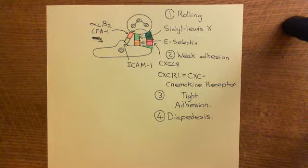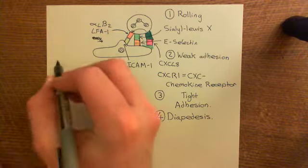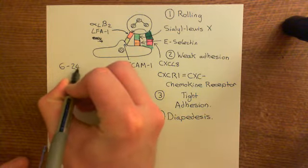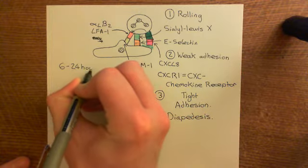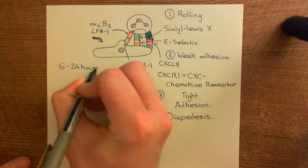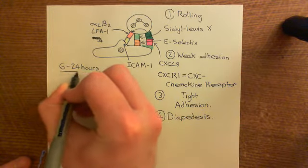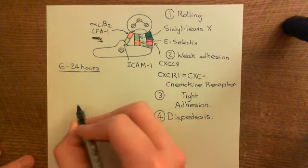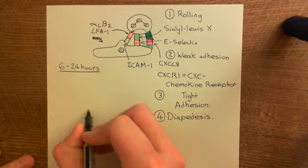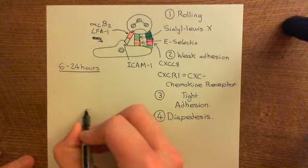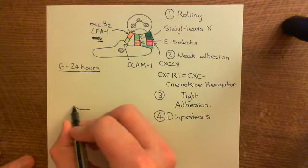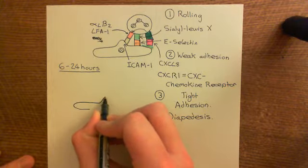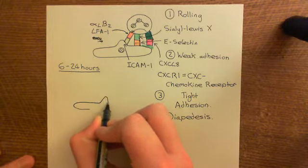But over time, after around 6 to 24 hours, the type 2 activation changes — it evolves. This is part of the programmed type 2 activation of endothelial cells. What happens is these endothelial cells stop expressing E-selectin and start producing new molecules.